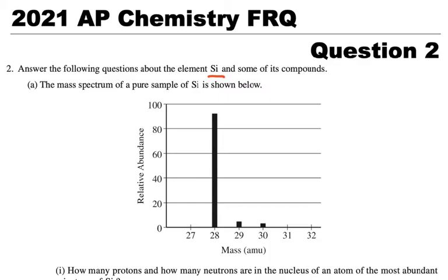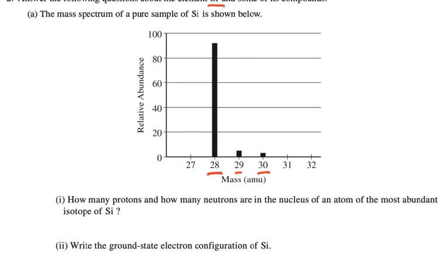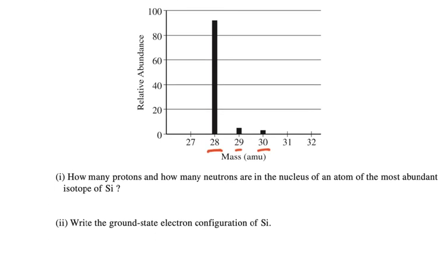Part A, the mass spectrum of a pure sample of silicon is shown below. A mass spectrum shows the various isotopes of silicon. There's an isotope of silicon that weighs 28, a little bit of 29, a little bit of 30. So in a sample of silicon it's mostly 28, but also 29 and 30. How many protons and how many neutrons are in the nucleus of an atom of the most abundant isotope of silicon? So we're talking about 28.